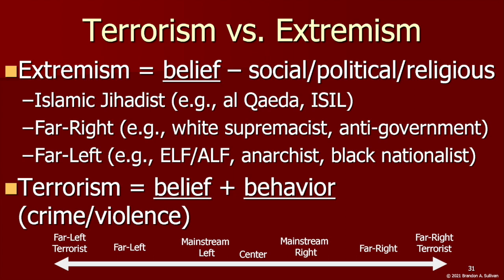Extremism speaks to a mindset, a belief, a value system, an ideology — something that is far outside conventional social, political, or religious beliefs. White supremacists, anti-government groups, Islamic jihadists, anarchists, environmental and animal rights extremists: those who engage in acts of violence or other crime based on this extreme ideological belief become terrorists. And it's not restricted to acts by formally recognized terrorist organizations such as ISIL — it can involve smaller groups or cells, or individuals acting alone, such as in cases of lone wolf terrorism. What matters is that the extremist ideology is combined with the behavior — an act of crime or violence — to further that belief.